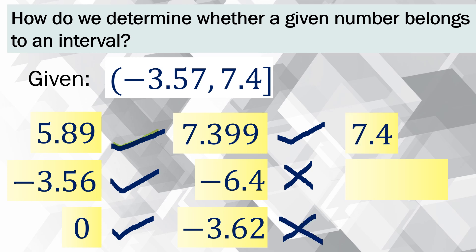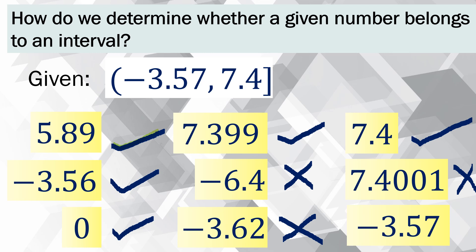Next number: 7.4. Do we consider 7.4 as part of the interval? We go back to the symbol — half bracket — meaning 7.4 is included in the given. What about 7.4001? That is already greater than 7.4, so it is not part of the interval. And negative 3.57 — we go back to the representation: we have a half-open parenthesis, so this symbol tells you that negative 3.57 is not part of the interval.